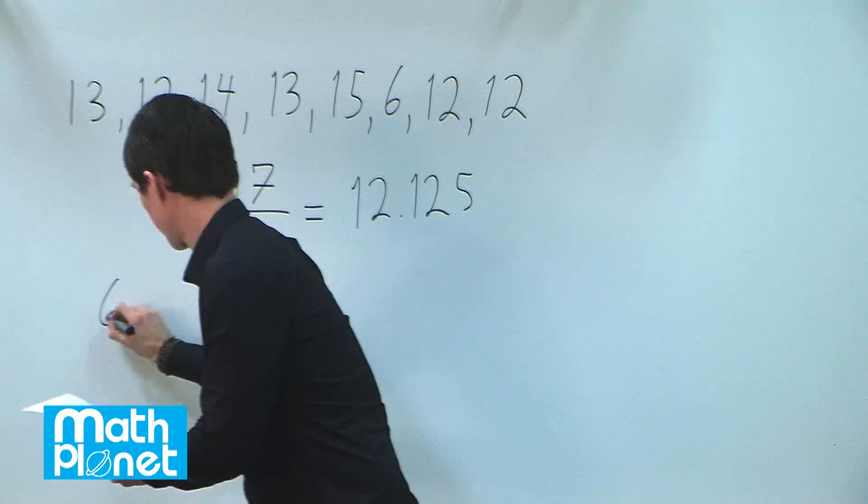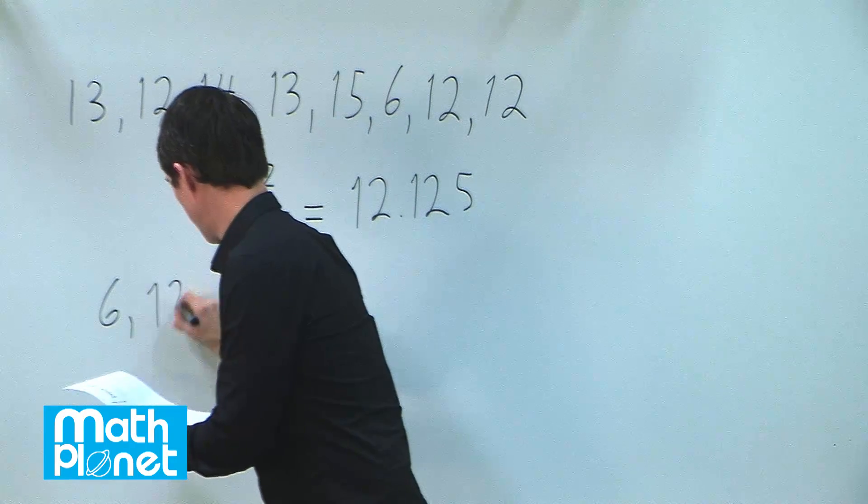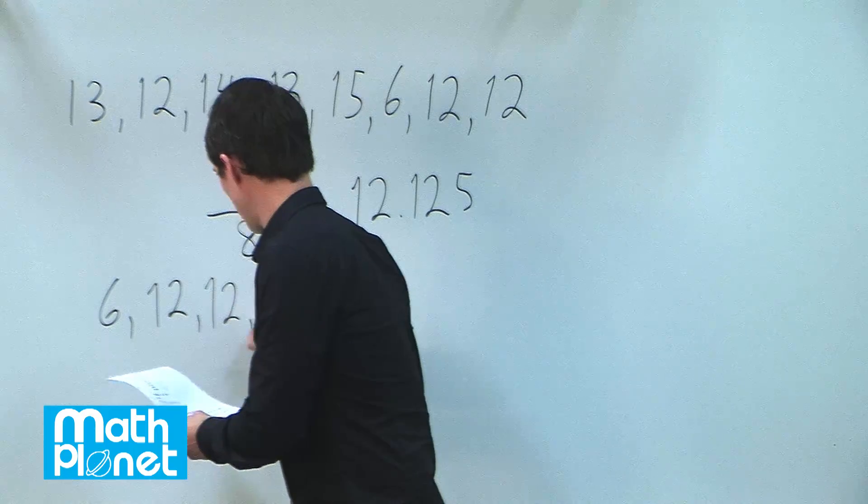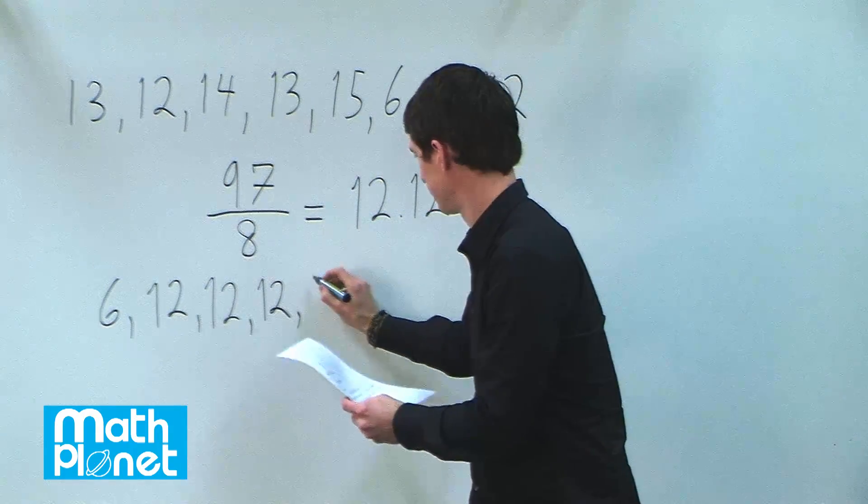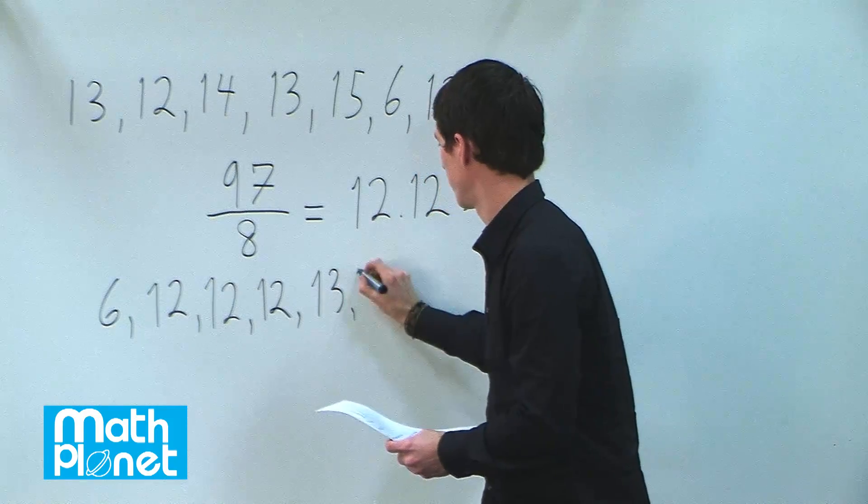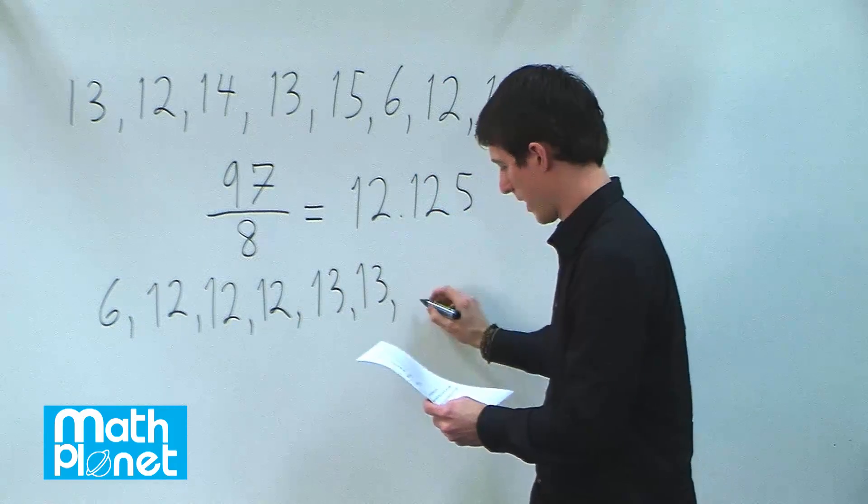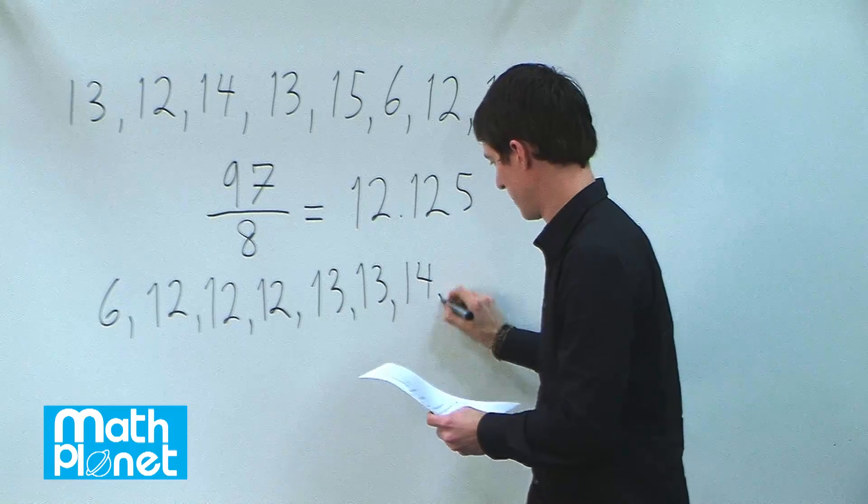So in that case we'll have 6, 12, 12, 12—there are three of them—13, and there are two of those, and 14, 15.